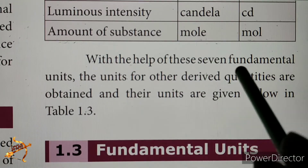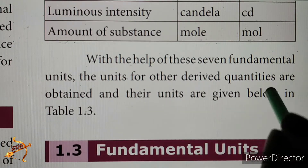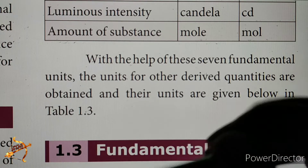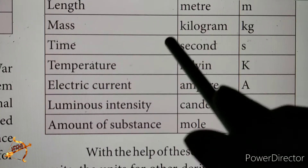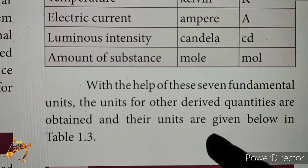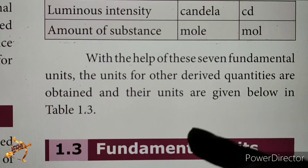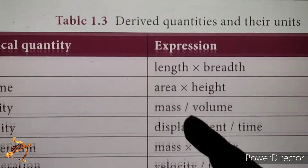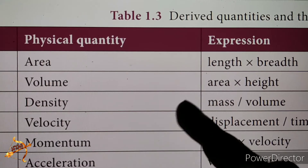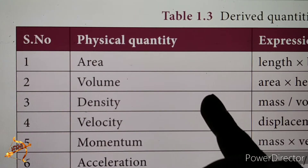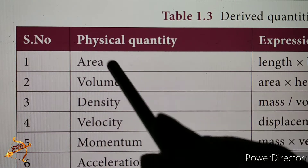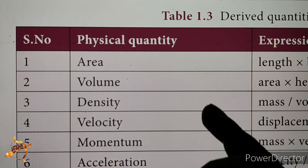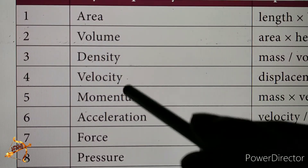With the help of these seven fundamental units, the units for other derived quantities are obtained. Table 1.3 covers derived physical quantities such as area, volume, and density.